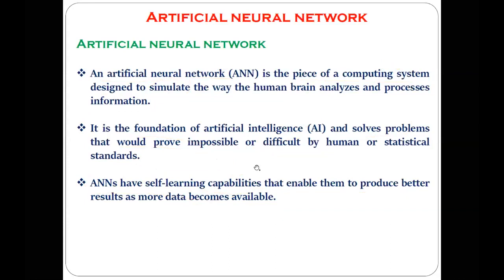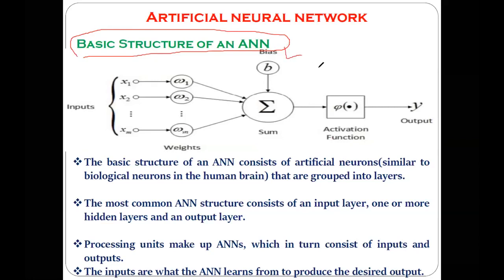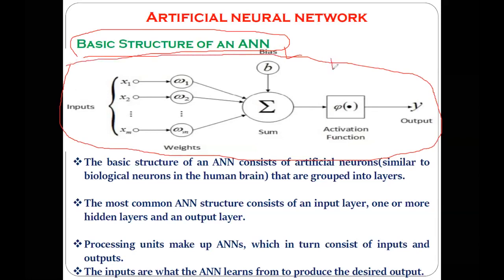That is the basic part related to artificial neural networks. Now let's come to the structure of the neuron in the artificial neural network. Just like yesterday we discussed the structure of the biological neuron with its different components, this is the structure of the artificial neuron — a question that is asked many times in exams.